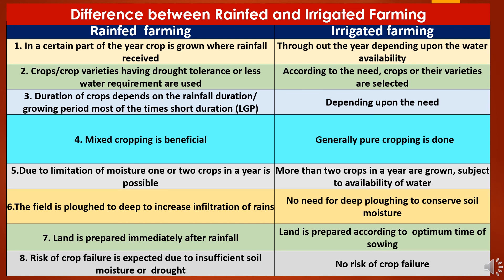Third, in rain-fed farming, duration of crops depends on the rainfall duration and the growing period must be short, while in irrigated farming, crops are grown depending upon the need. Fourth, in rain-fed farming, mixed cropping is beneficial, while in irrigated farming, generally pure cropping is done. Fifth, due to limitations of moisture, only one or two crops in a year are possible in rain-fed farming, while in irrigated farming, more than two crops can be grown in a year subject to water availability.